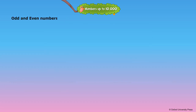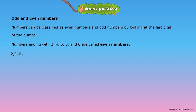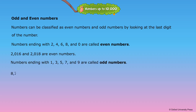Odd and even numbers. Numbers can be classified as even numbers and odd numbers by looking at the last digit of the number. Numbers ending with 2, 4, 6, 8, and 0 are called even numbers. 2,016 and 2,018 are even numbers. Numbers ending with 1, 3, 5, 7, and 9 are called odd numbers. 8,747 and 8,749 are odd numbers.